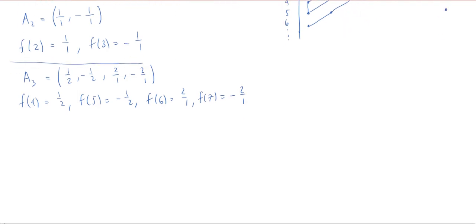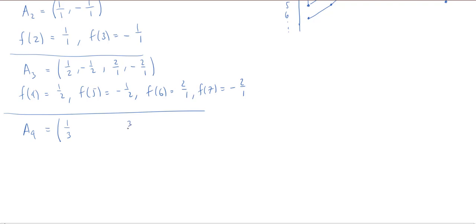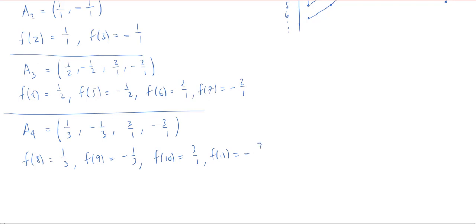Let's try A sub 4 next. For A sub 4, I need the numerator and denominator to add up to 4. I could do 1 over 3 — but 2 over 2, those are not co-prime, both divisible by 2, so I can reduce that to 1 over 1 and throw it out. So I have 1 over 3 and 3 over 1, plus their respective negatives. So F of 8 is 1 third, F of 9 is negative 1 third, F of 10 is 3 over 1, and F of 11 is negative 3 over 1.